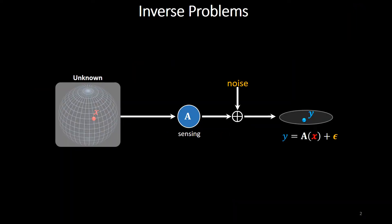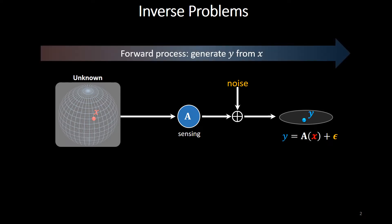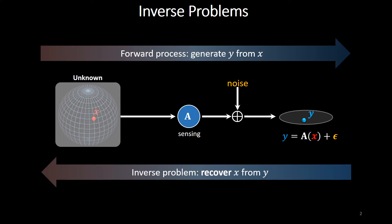In this paper, we tackle imaging inverse problems. Here we are interested in an unknown image x presented through an instrument or sensing operator A, which can be linear or non-linear. Beyond the sensing operator, there's also some noise that comes in through sensing, and we end up observing the measurement data y. The mapping from unknown x to y is called the forward process, which is straightforward as long as you know the physics of the sensing operator A and the statistics of noise. What we're really interested in are the inverse problems — the practical problem of recovering the unknown x, the true object, given the measurement y.